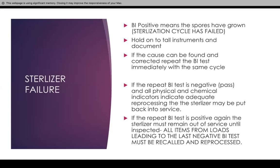If the cause can be found in the sterilizer, we do have technicians on hand — just notify the front desk or office managers and a person comes in right away to check everything. If the cause can be found, you can repeat one BI test immediately with the same type of cycle. If it's an unwrapped cycle, you have to place an unwrapped BI; if it's a wrapped cycle, use the same cycle. If there are no spores growing, you can go ahead and reuse the sterilizer, but you have to document everything.